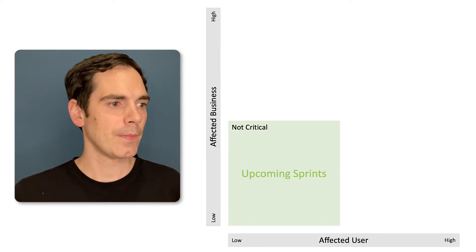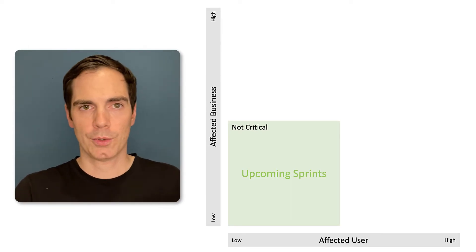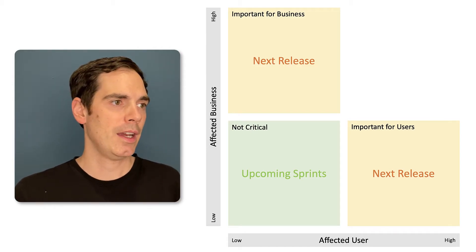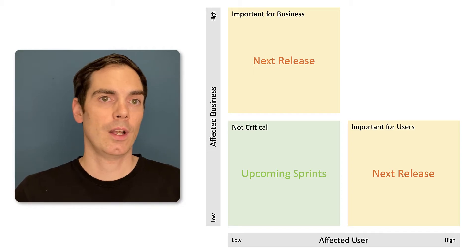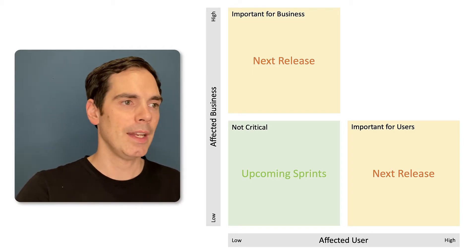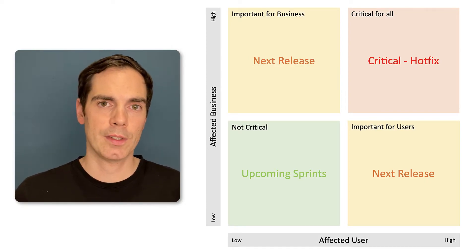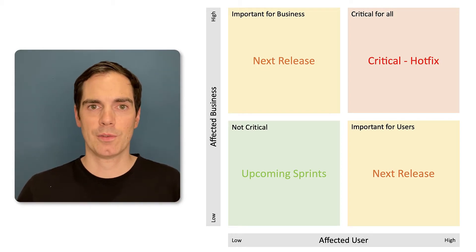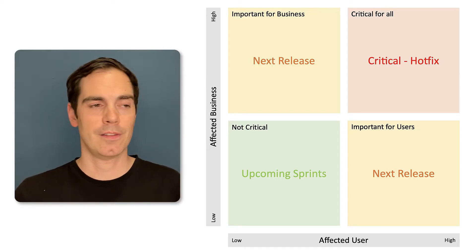What are the categories? The first is not so critical — it has low impact to the business and low impact to the affected users. This is a bug that maybe can be done in an upcoming sprint. The next two are rather for the next release: one has high business impact but low user impact, the other has high user impact but low business impact. And last but not least, we have a critical one — a hotfix-worthy bug that is critical for the business and for the user. This is something where you should stop current work, sit together with the developer and product manager, and try to find all the missing pieces to get the problem solved as soon as possible.